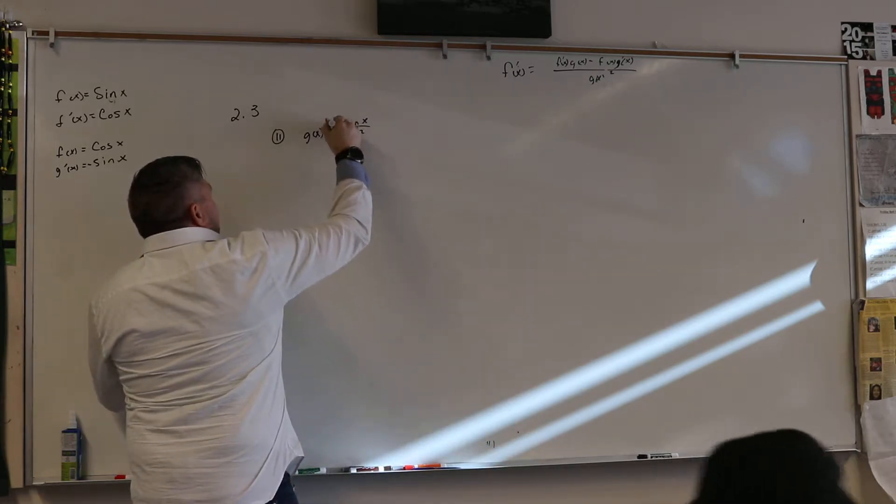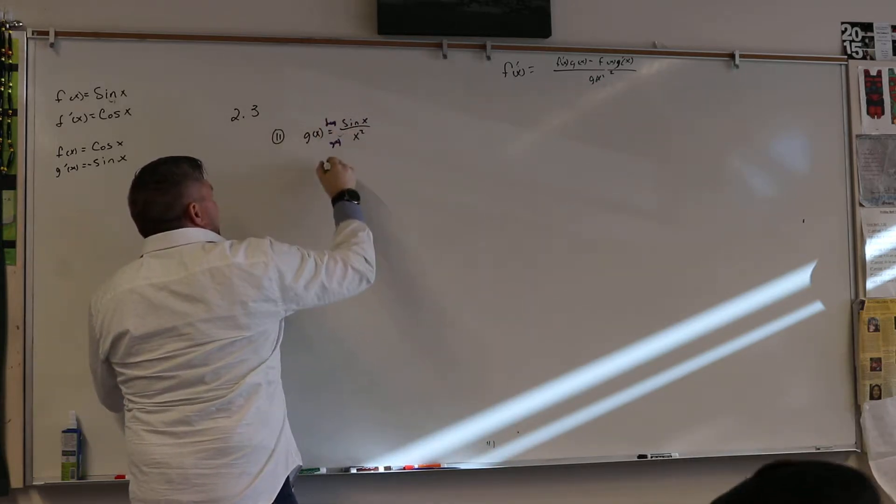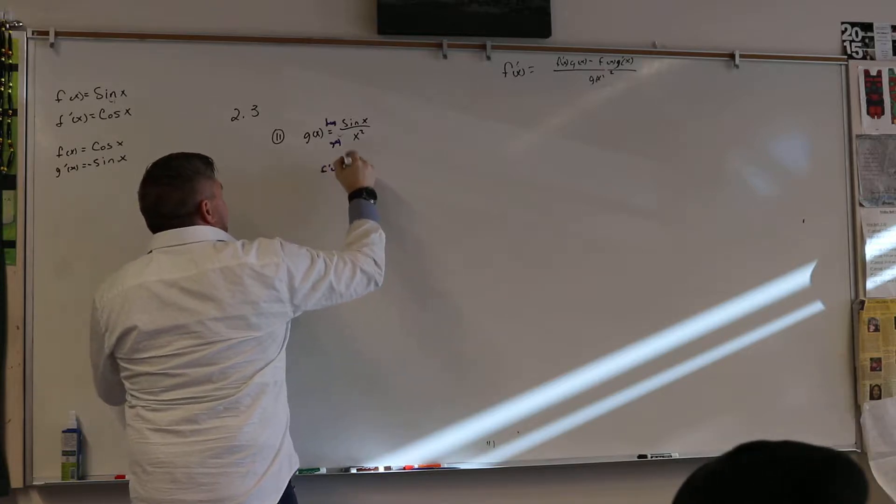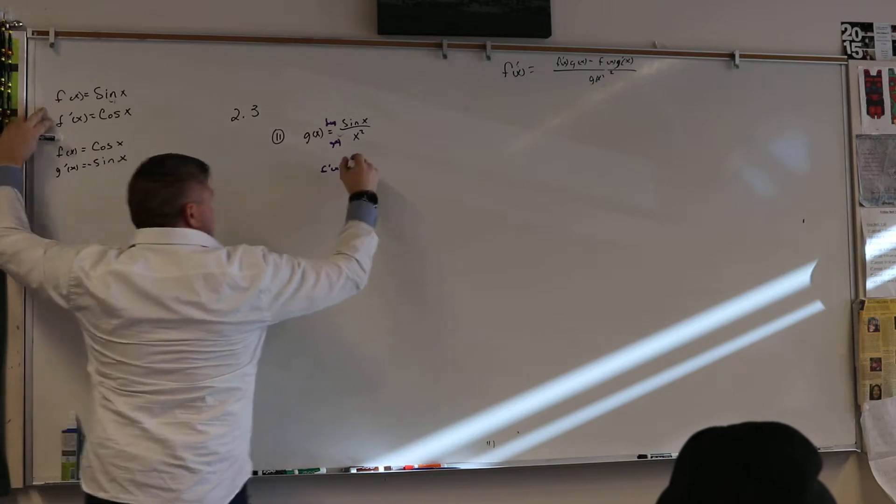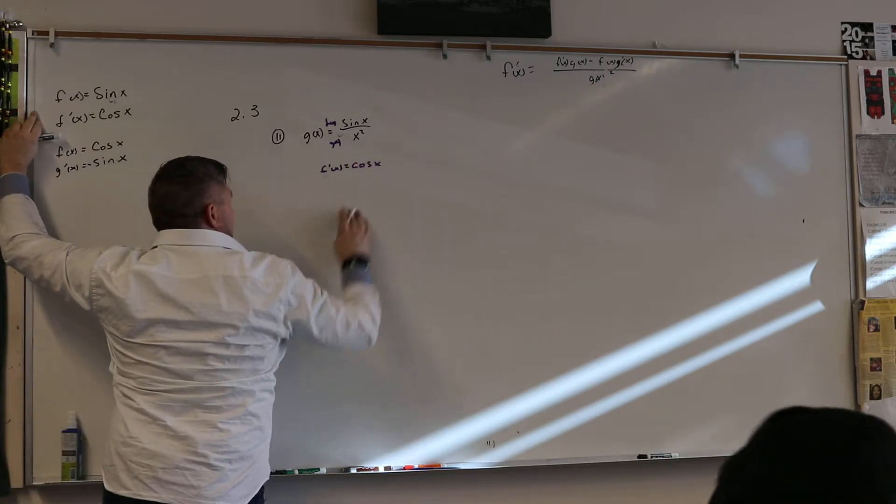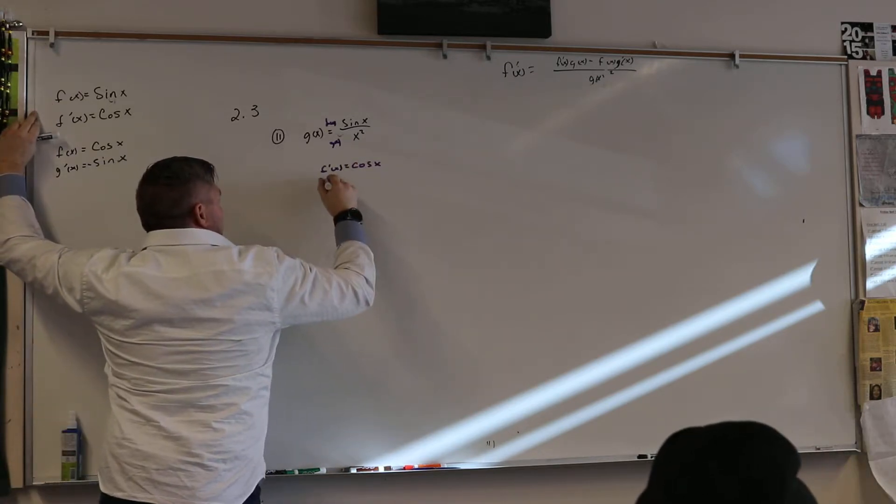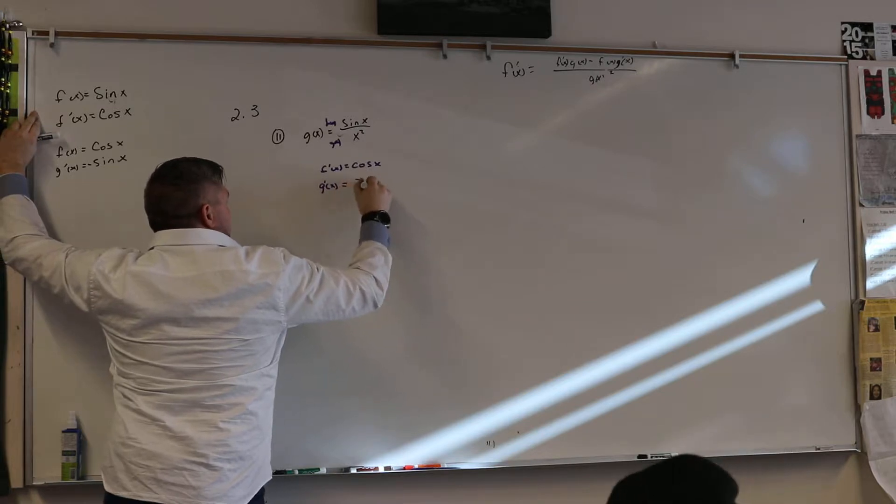If this is f of x and this is g of x, then f prime of x is equal to the cosine of x. g prime of x is equal to 2x.